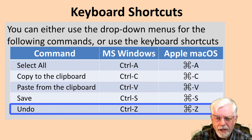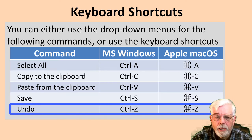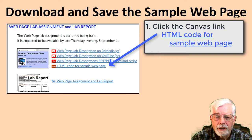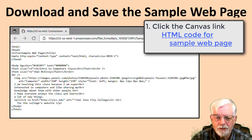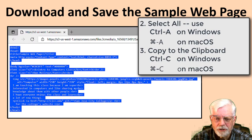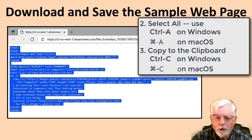Now, on to the actual web page project. Here is more detail for the steps. Step 1: click the HTML code for the sample web page link on Canvas to display the sample code. Step 2: select all of the code. Step 3: copy it into the clipboard.